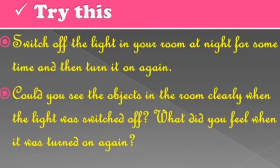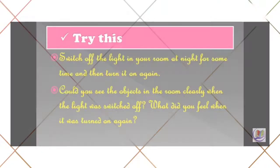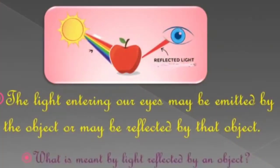Thus, we can see objects when the light coming from an object enters our eyes. The light entering our eyes may be emitted by the object or may be reflected by that object. What is meant by reflection by an object? To understand this, let us learn about the reflection of light.